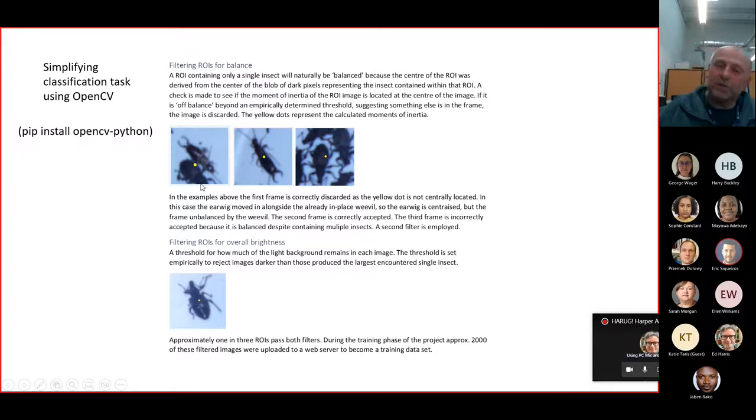So we would discard that image. We would say the center of gravity is too far beyond some threshold away from the center. And we're discarding it for that reason. The second one is perfect. You can see it's spotted the middle of that earwig. But the one on the right also appears perfect because whilst there's more than one insect, they're evenly distributed around the edge, thus balancing the picture. So we had to employ a second method, a second filter, if you like. So if it passes this first test, so the earwig did and so did the huddle, then apply a second simple test.